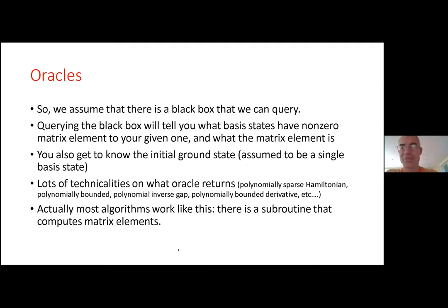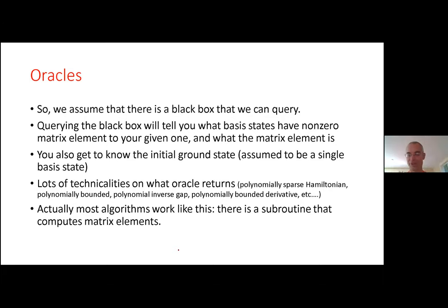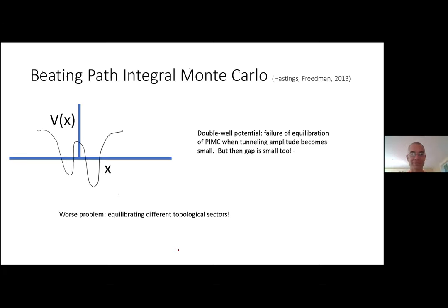In general, there's an oracle you ask questions of: given this basis state, what can I get to from there? Most algorithms work this way — somewhere inside there's a subroutine that computes matrix elements from one state to another. So this gives a lower bound in the oracle setting: any algorithm that claims to always solve this adiabatic no-sign-problem computation must exploit structure of the Hamiltonian; you can't treat Hamiltonians as a black box.